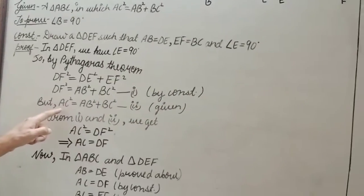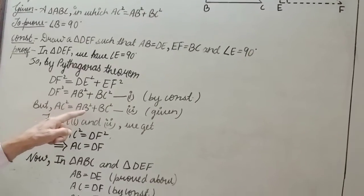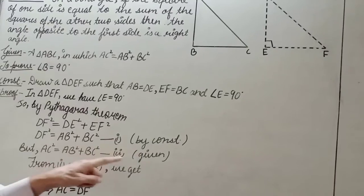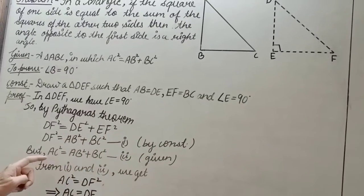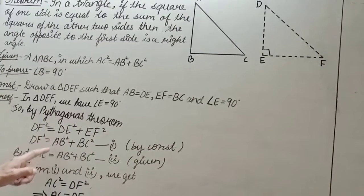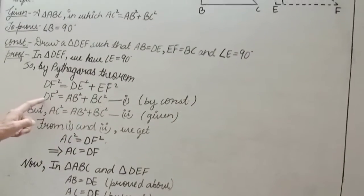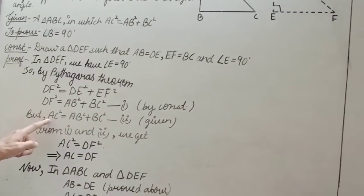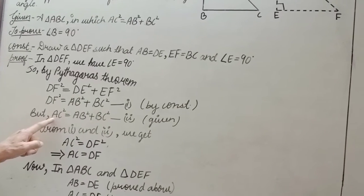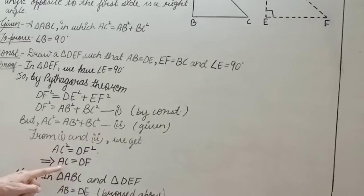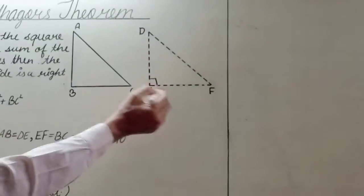But, we are also given that AC² = AB² + BC². This is given. Comparing these two equations, we have DF² = AC². Or, DF = AC.